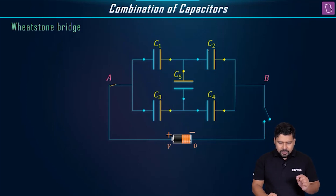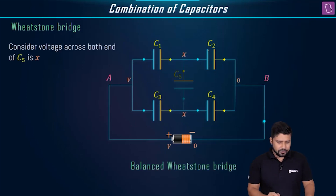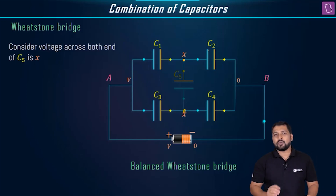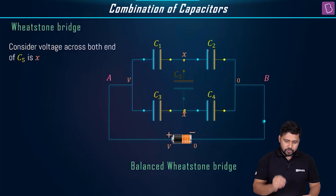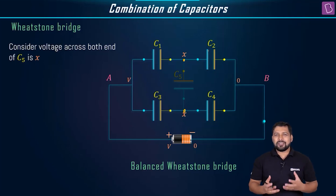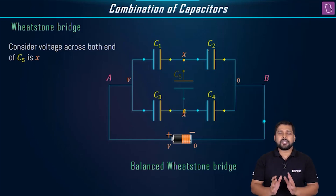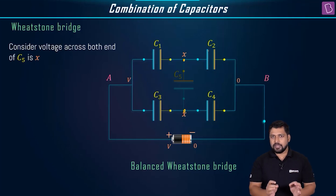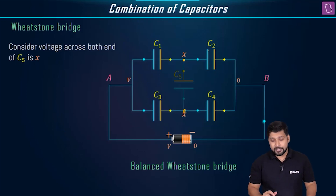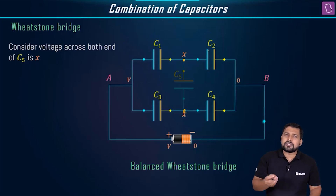We are only going to deal with the balanced Wheatstone Bridge — the case where the potential difference across C5 is equal to zero, meaning both middle points are at the same potential X. We will try to prove this in a converse manner: we assume the potentials at these two points are equal, and then prove that this can only happen when the ratio C1/C3 equals C2/C4. The actual proof comes only through KVL and KCL.